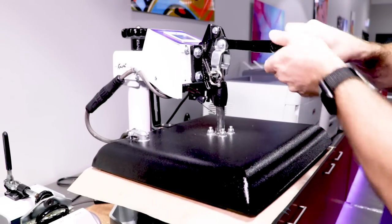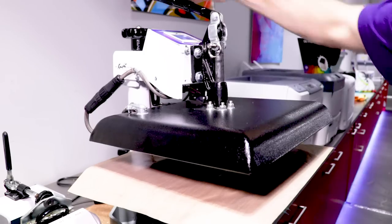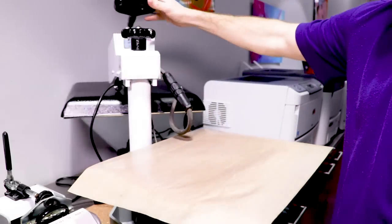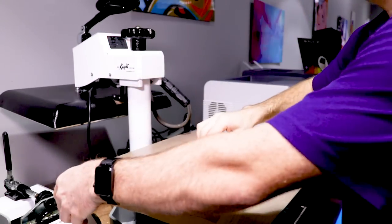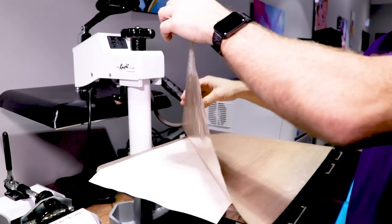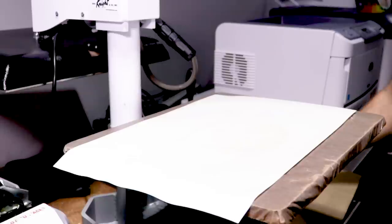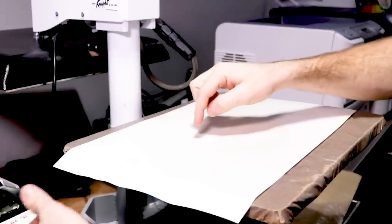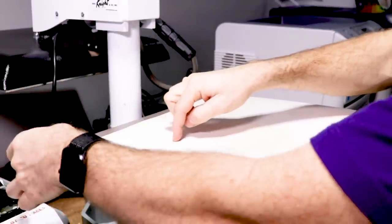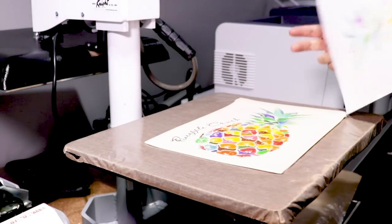Once the timer has elapsed, open the heat press, remove the teflon sheet, and remove the transfer paper in an upward motion.